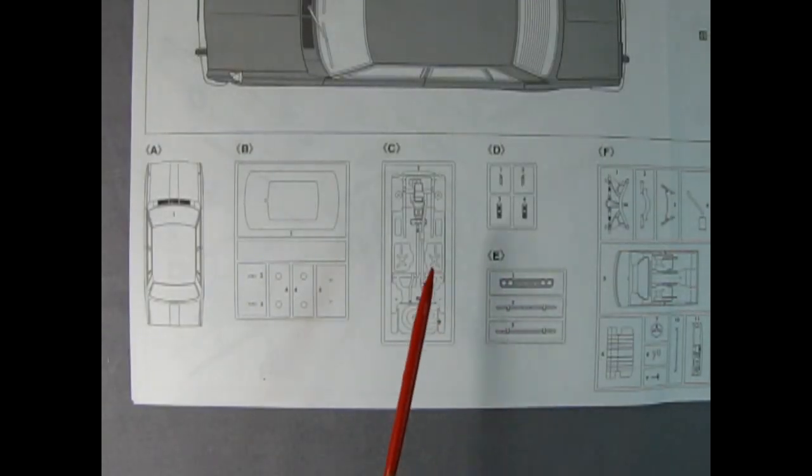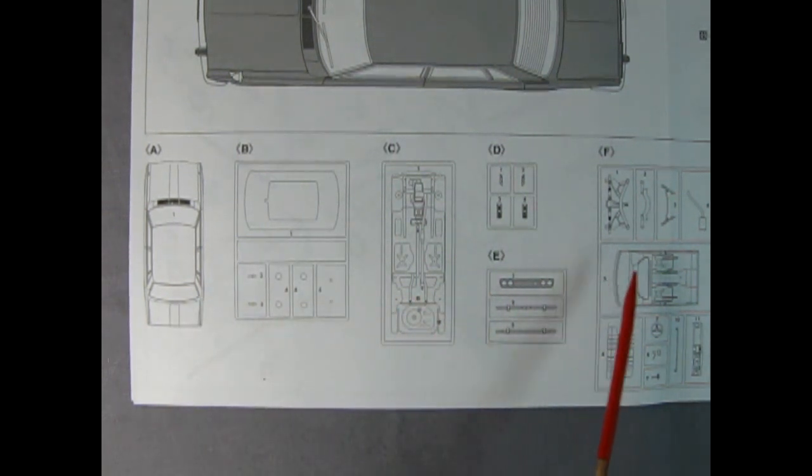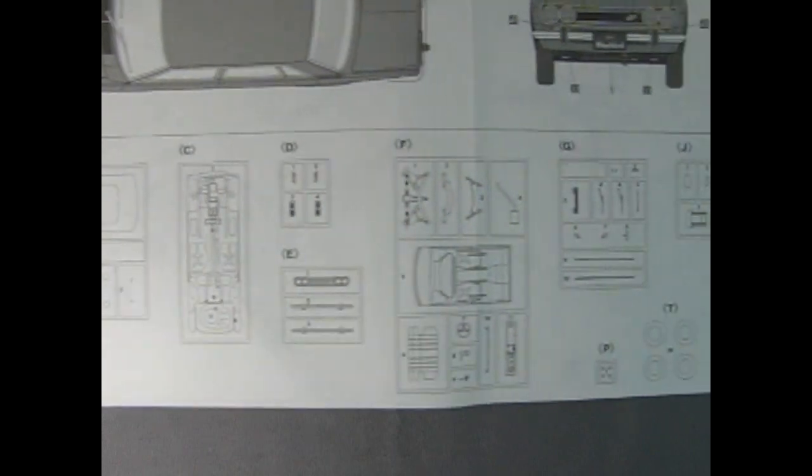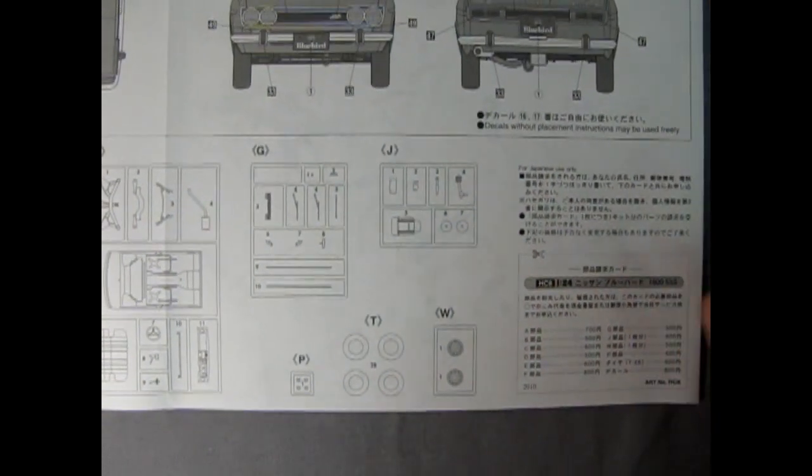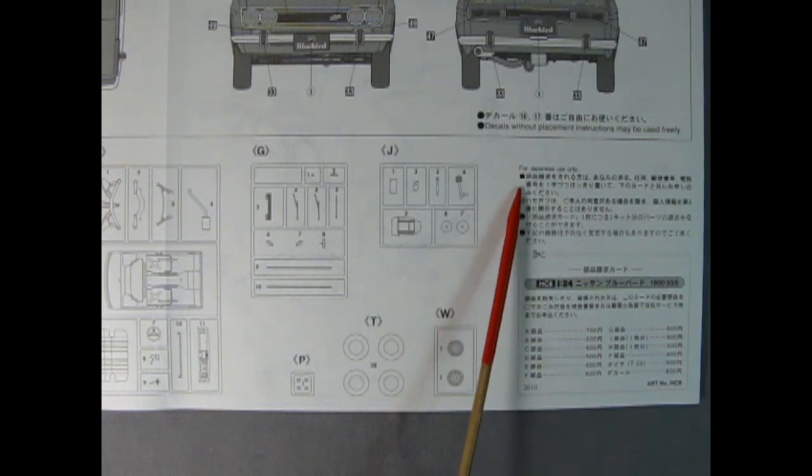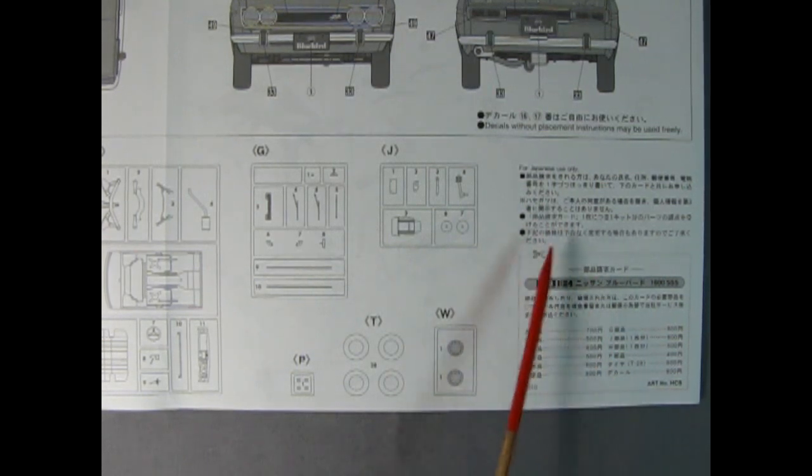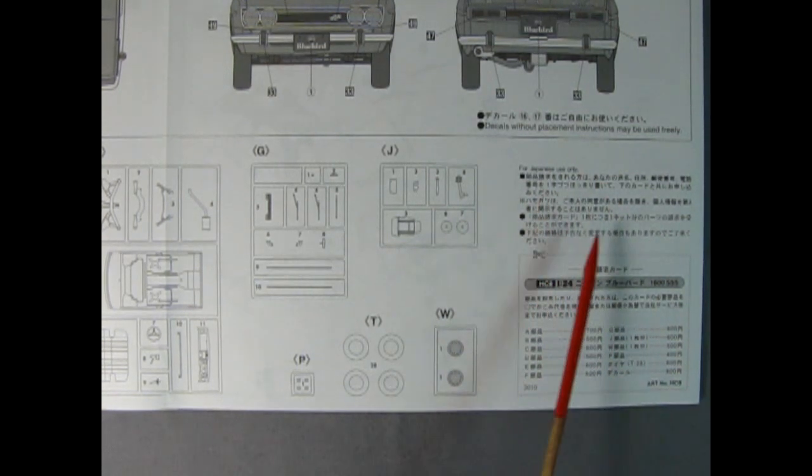To wrap up, one thing that is nice about this Fujimi instruction sheet is right down here it gives you all the parts trees and what you're going to expect to see on them. You can see it continues with the tires and the decals and everything else as well as the paint charts. I'm not really sure which ones this would be, maybe Mr. Hobby or one of those ones. It says for Japanese use only and that's all written in Japanese.